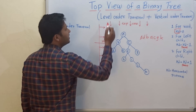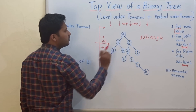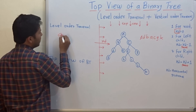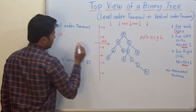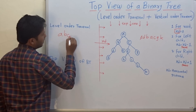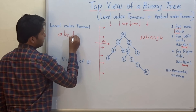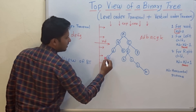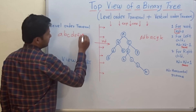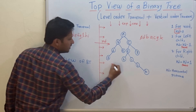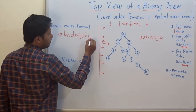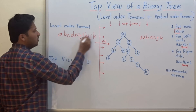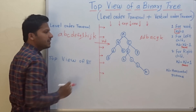Let's print the level order traversal of this binary tree. The level order traversal is: A, then B, C, then D, E, F, G, then L, H, I, then J and K. This is the level order traversal of this binary tree.